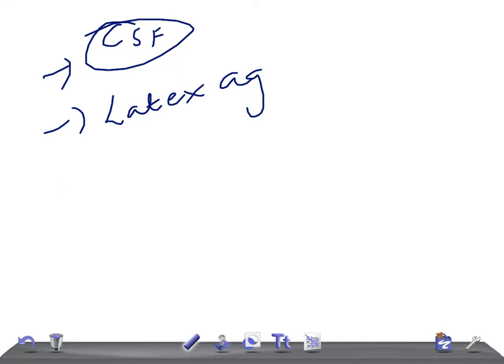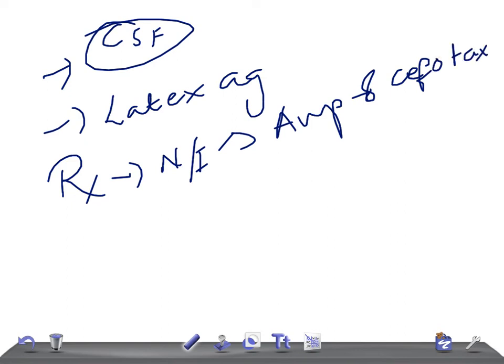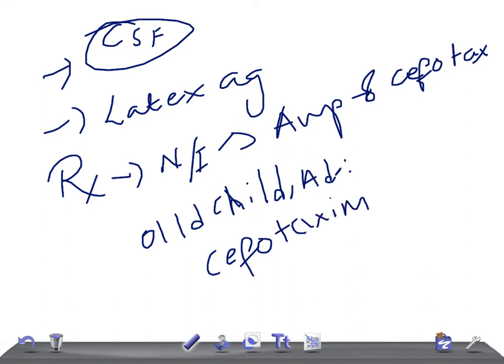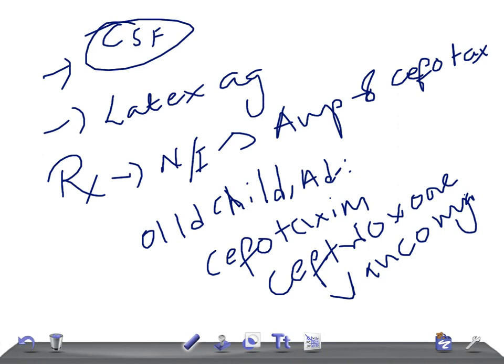Now let's talk about treatment. If it's a neonate or infant, we treat with ampicillin and cefotaxime. If it's an older infant, children, or adult, we use cefotaxime, ceftriaxone with or without vancomycin, because we need to prevent Waterhouse-Friderichsen syndrome.